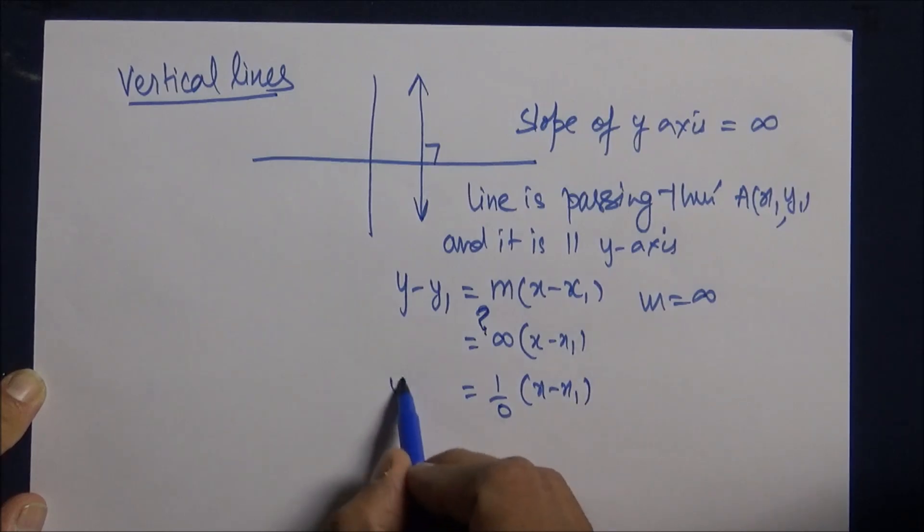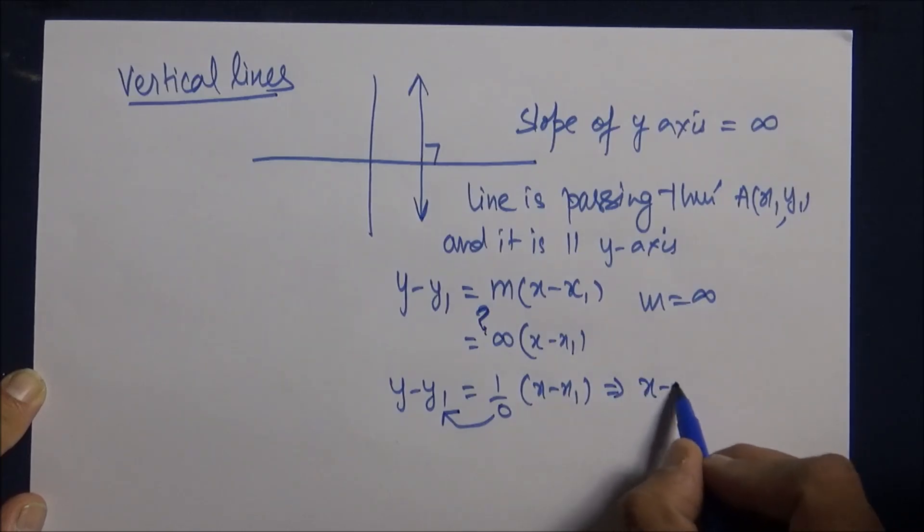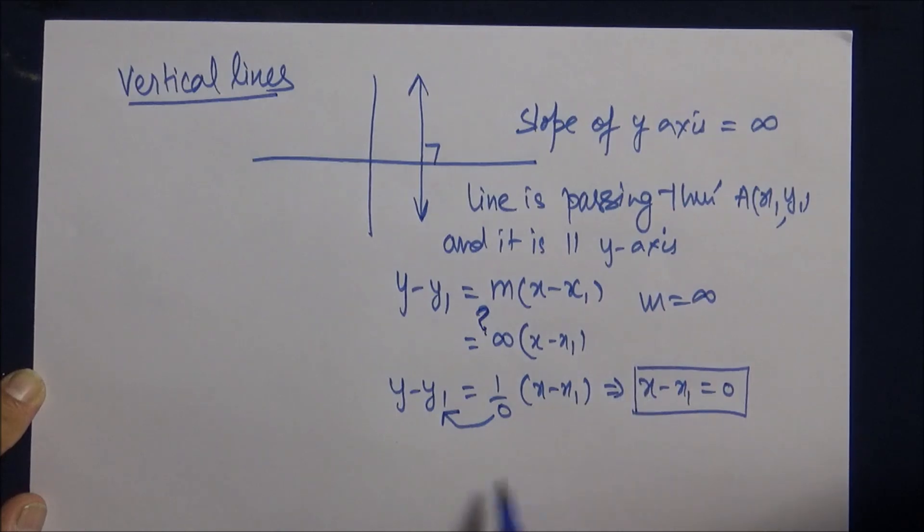It is simply not good to put infinity here but still I am putting for the sake of understanding. Then we are shifting 0 to the other side. So we get x minus x1 is equal to 0. So x equals x1 is the equation for the vertical lines.